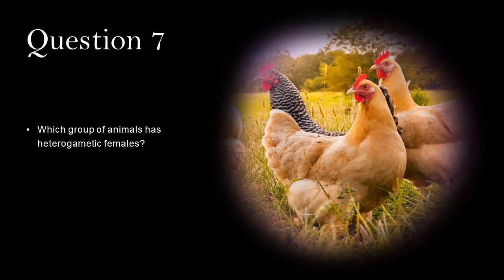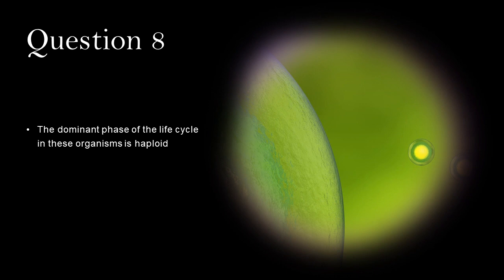Which group of animals has heterogeneous females? Domestic fowl. The dominant phase of the life cycle in these organisms is haploid: Mosses.